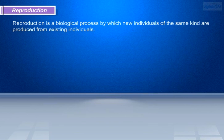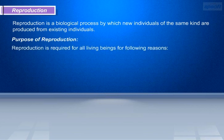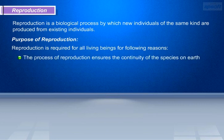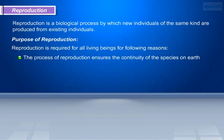Reproduction is a biological process by which new individuals of the same kind are produced from existing individuals. Reproduction is required for all living beings because the process of reproduction ensures the continuity of the species on earth. Reproduction provides group immortality by replacing the dead individuals with the newborn.